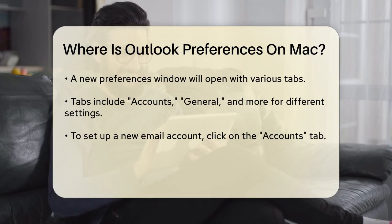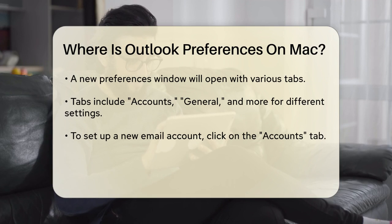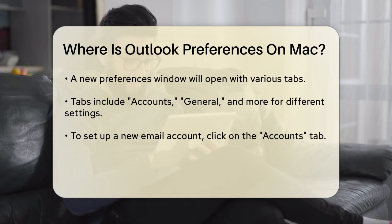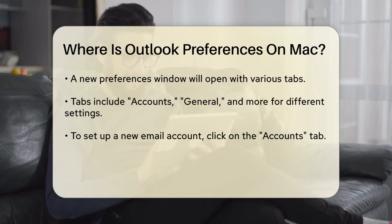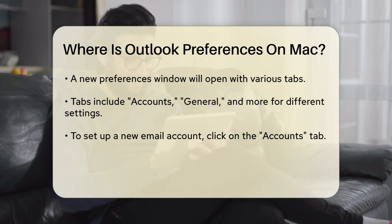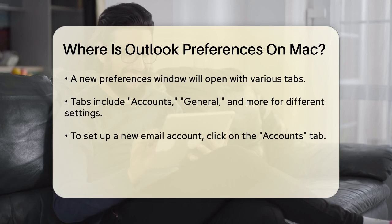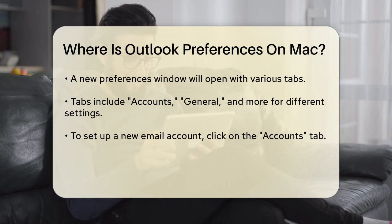This will open a new window where you can manage various settings for Outlook. In this Preferences window, you'll see several tabs such as Accounts, General, and More. Here you can configure different aspects of Outlook like setting up new email accounts, managing your inbox, or adjusting general settings.